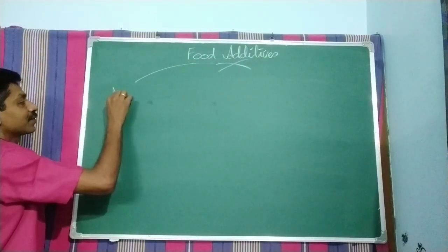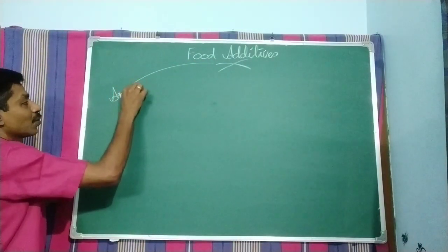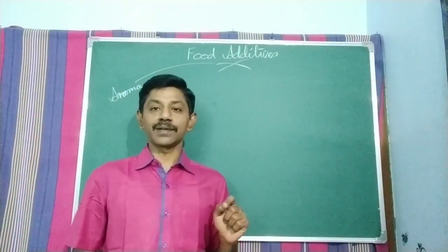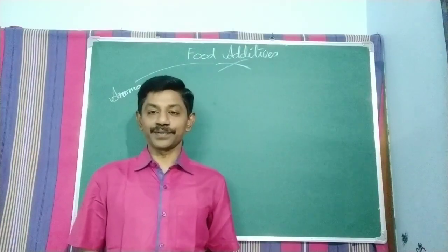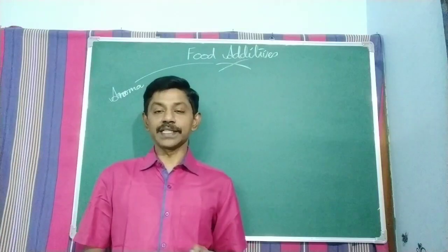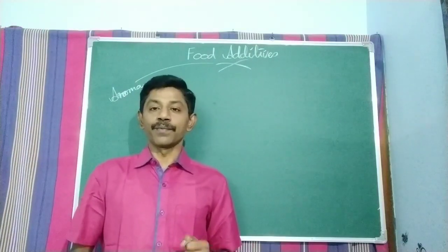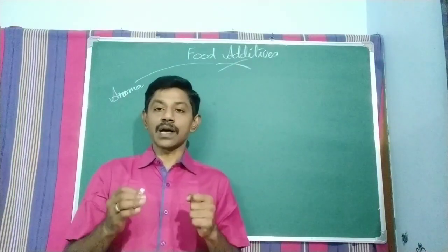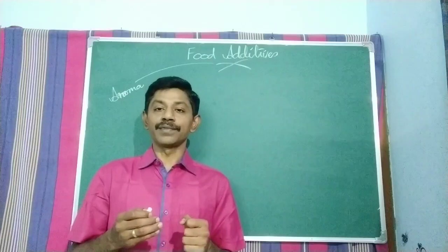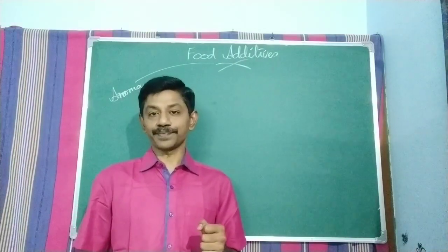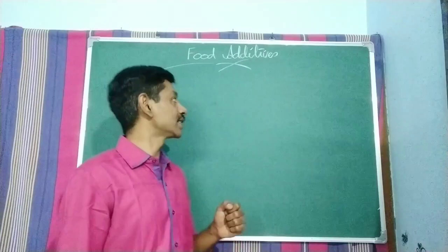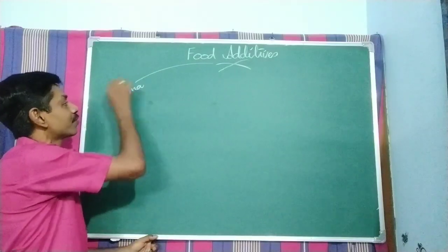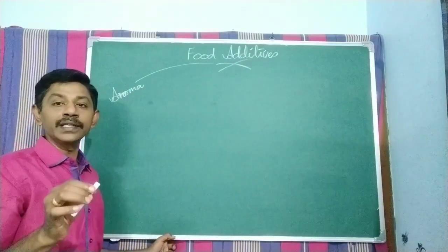The first category is aroma. In chemistry we learn about aromatic compounds — aroma means smell, sweet smelling. Only when a particular food has a good flavour and aroma will we feel happy taking it. So certain chemicals are added to give a good flavour to the food we purchase.